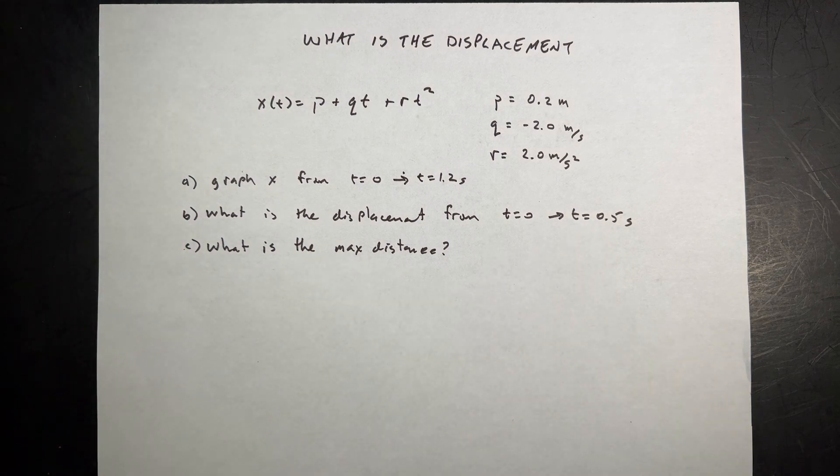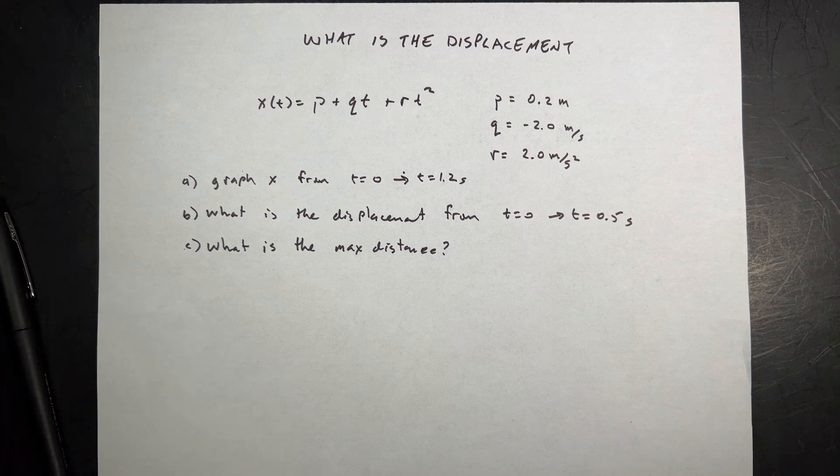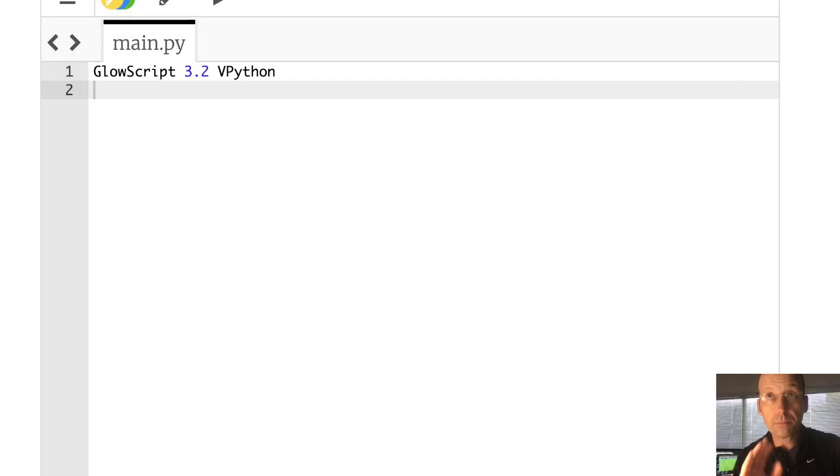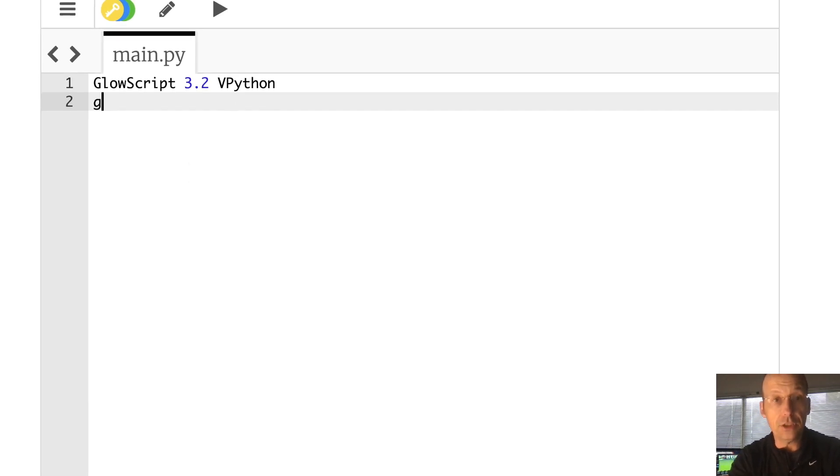So let's just jump over to Python. This would be a great opportunity to practice making graphs in Python. Okay, so I'm going to give you the code. The first thing we want to do, I'm using GlowScript Python, is to say g1 equals graph. Let's give it a title motion of object. And then we'll give it an x title time in seconds.